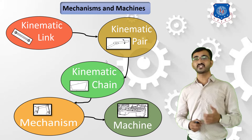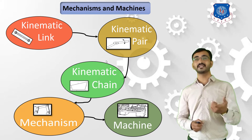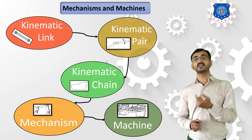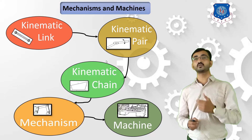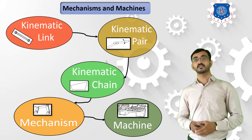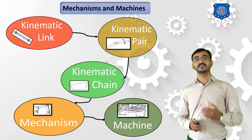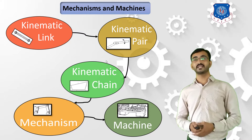In our previous session, we learned that a Kinematic Link is nothing but an element which has relative motion with respect to the other element. So after learning about Kinematic Link, now in this session, we will learn about Kinematic Pair.